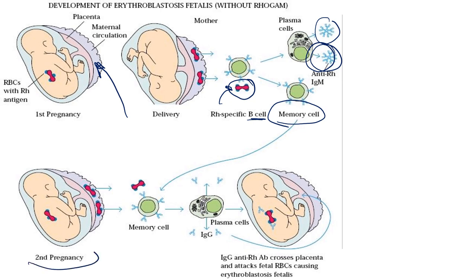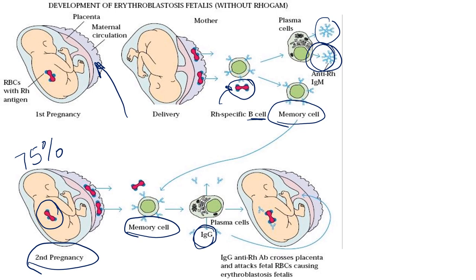During the second pregnancy with an RH positive child — for which there is again a 75% chance — the memory B cells quickly convert into plasma cells and produce a large number of antibodies against the RH factor.